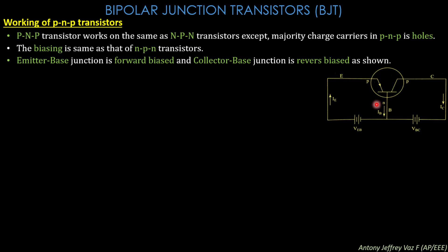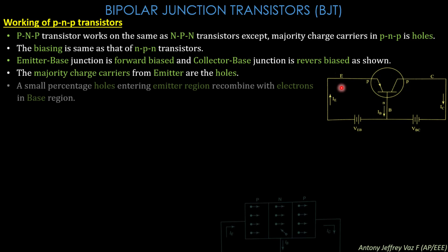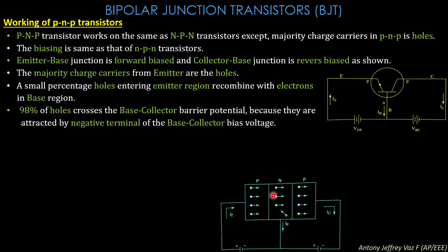The emitter-base junction is forward biased and the collector-base junction is reverse biased, the same as for NPN. The majority charge carriers from the emitter are holes. Due to the forward-biased emitter-base junction, holes from the emitter enter the base region. Only 2% of the holes recombine with electrons in the base because the base is lightly doped with very few electrons. Then 98% of holes cross the base-collector barrier, attracted by the negative terminal of the collector bias voltage.